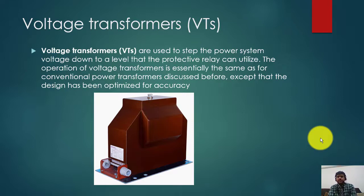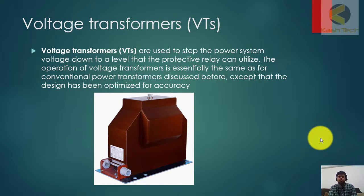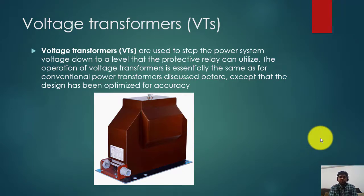If the relay reads 50% of the voltage — for example, the VT ratio is 132 kV to 100 volts — and 50 volts is coming to the relay, the programming we do in the numerical relay will show it as half of 132 kV. In this way the system works, and low voltages are very easy to handle at the secondary side.